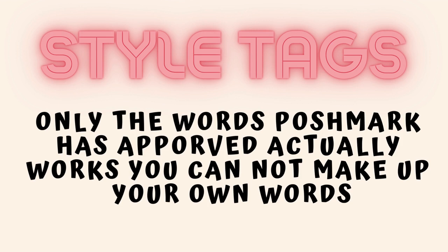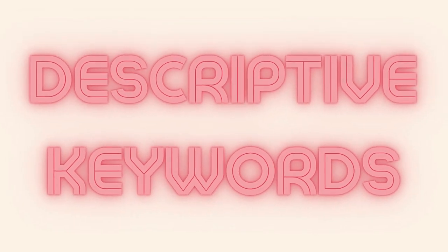Only words that Poshmark has approved will actually work — you can't make up your own. Some of the words they have include athletic, athleisure, cottagecore, bohemian, stretchy, and statement sleeve. There are so many — I think there's a list of maybe a hundred or so words. But you have to be careful because you can't use words they don't have.